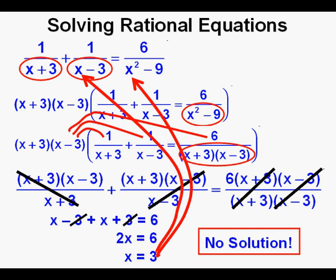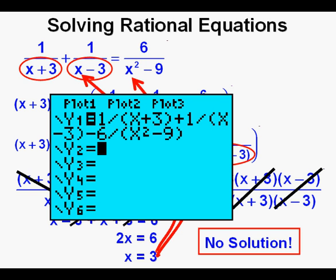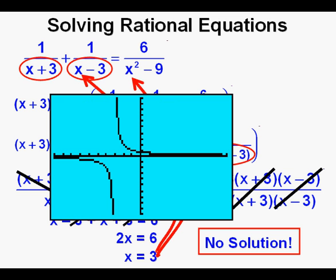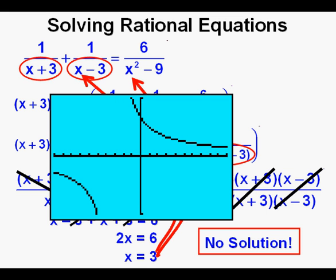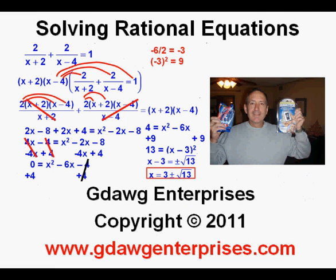We can verify this by graphing the equation on a calculator. Here is the equation solved for zero entered into y1, and here is the graph. It approaches the x-axis but doesn't touch it. It's even more apparent with the view window changed — the x-axis is what we call a horizontal asymptote; the values will approach zero but never equal zero. This has been solving rational equations. Thanks for viewing.